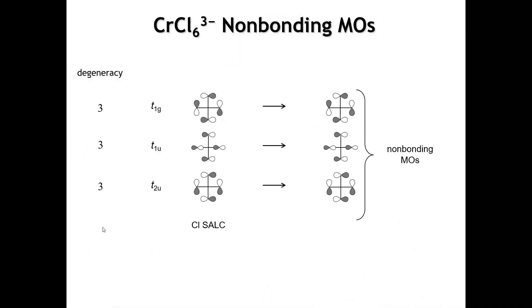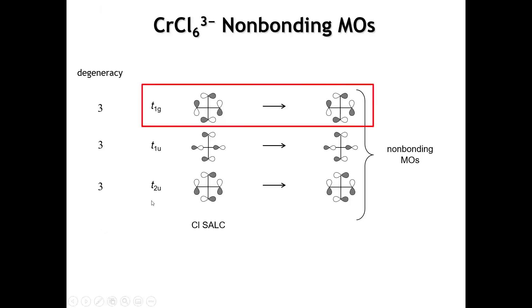What are the others? The others are shown here. Two of these, the T1g and the T2u, the p orbitals are oriented perpendicular to the bonds. If you looked at these symmetries for a minute, you would quickly realize that there is no orbital on the central chromium that can overlap in either a bonding or an antibonding way with these orbitals. So these are strictly non-bonding chlorine SALCs.